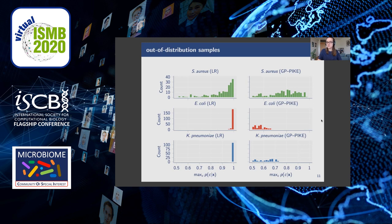Looking at our GP-PIKE method, for in-distribution samples all values from 0.5 to 1 are assigned but are much more evenly distributed. More importantly, when the classifier is presented with out-of-distribution samples, the class probabilities drop and almost only values smaller than 0.7 are assigned. The classifier seems to recognize its own incapability to classify samples from a completely different distribution and adjusts its reported probabilities. This behavior is caused by the non-linear decision boundary of a Gaussian process, which permits proper probabilistic classification of unseen samples.